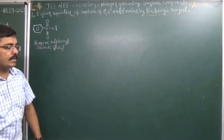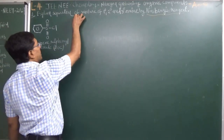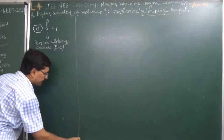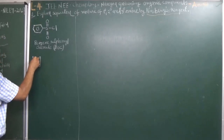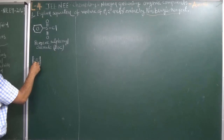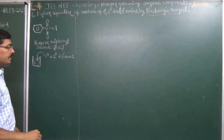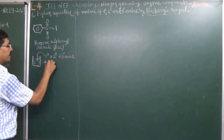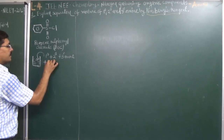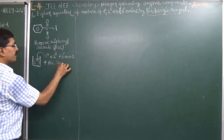By using benzene sulfonyl chloride, we have to separate the mixture of Primary, Secondary, and Tertiary Amines. Assume we have a container with a mixture of all three. We add the Hinsberg reagent — benzene sulfonyl chloride — into it.